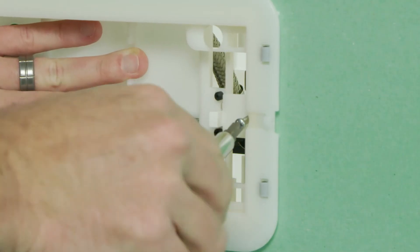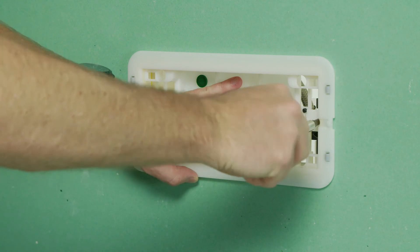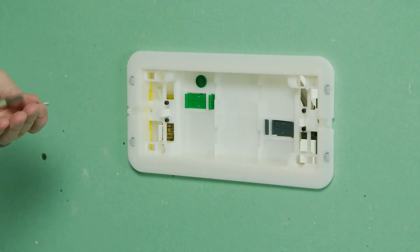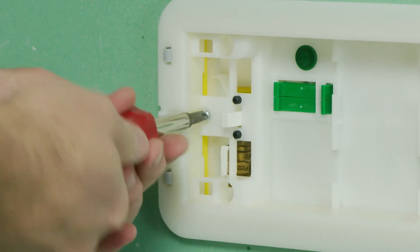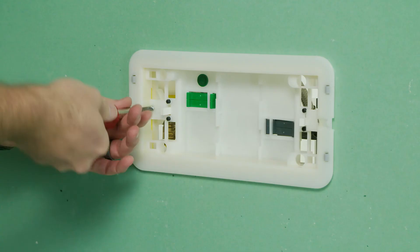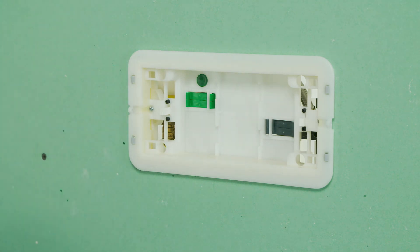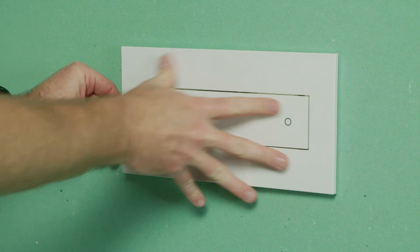Attach flush plate frame with screws provided. Push actuator plate into place until it clicks.